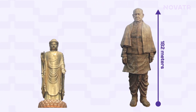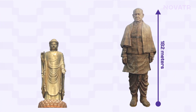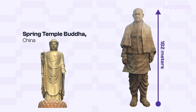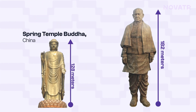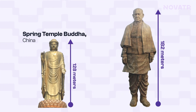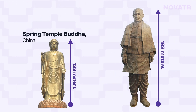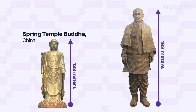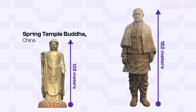Let us help you visualize just how tall the structure is. The statue that comes second is the Spring Temple Buddha in China, standing at 128 meters. That's a huge gap.